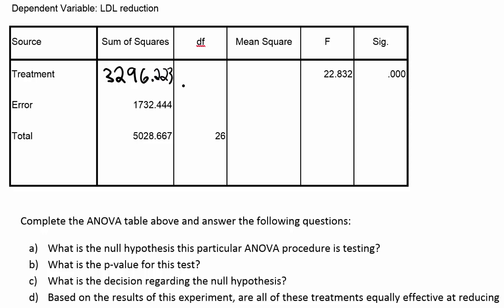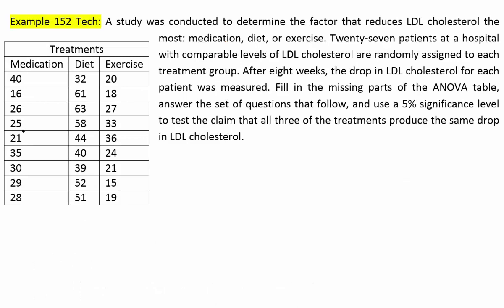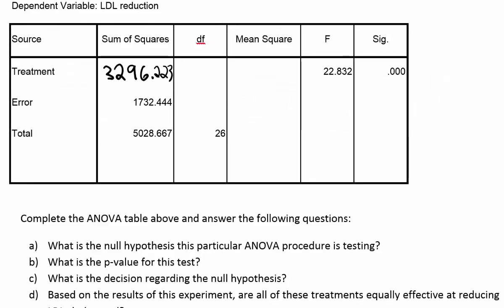Now we need to work on the degrees of freedom. We have the total degrees of freedom, but we're missing both the treatment and the error degrees of freedom. We had three treatments — medication, diet, and exercise — so the degrees of freedom for treatment is 3 minus 1, which gives us 2.